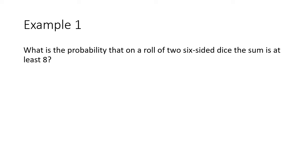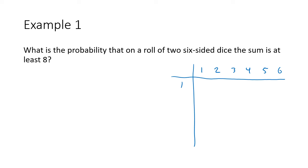What's the probability that on a roll of two six-sided dice the sum is at least eight? We need to understand that even though repetition is allowed — we can roll the same number on both dice — we need to make order matter here. We make a chart with the possibilities of the first die, one through six, and the possibilities of the second die, one through six, giving us 36 possible equally likely outcomes. The size of our sample space is 36.